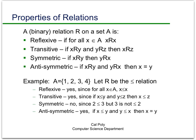R is symmetric if whenever x is related to y, then y is also related to x — in other words, in the directed graph, if you have an arrow from x to y, you also have an arrow back from y to x. R is anti-symmetric if whenever x is related to y and y is related to x, then x must equal y. A good example of anti-symmetry is the less-than-or-equal-to relation.